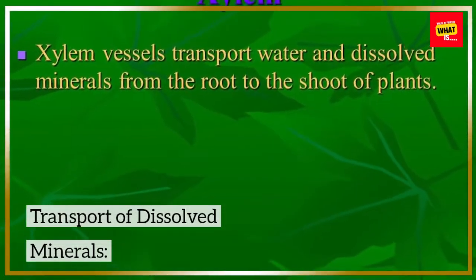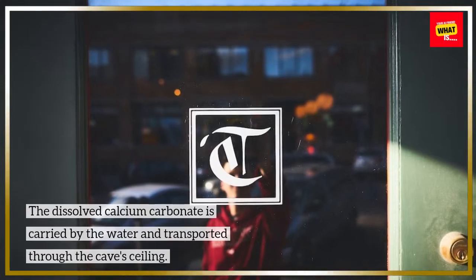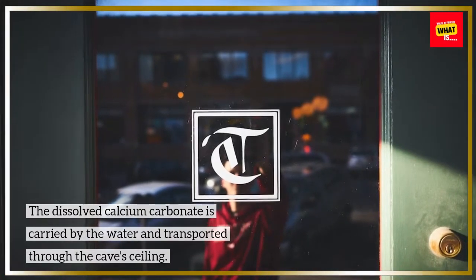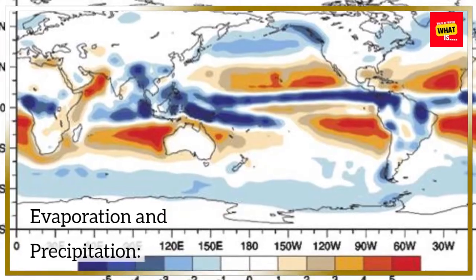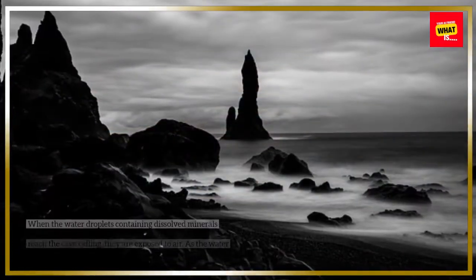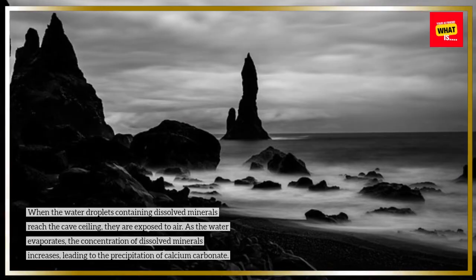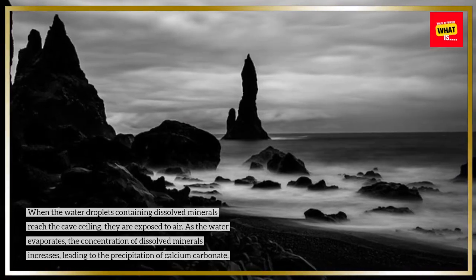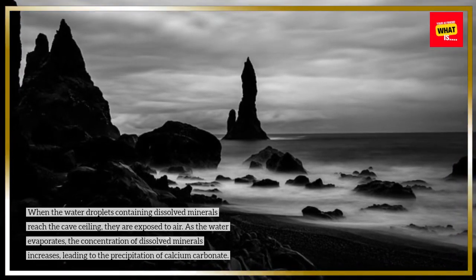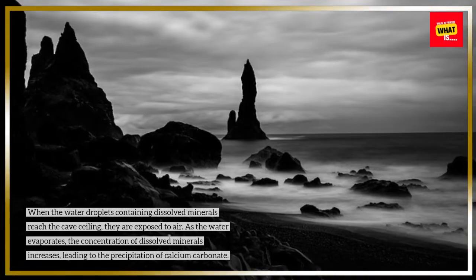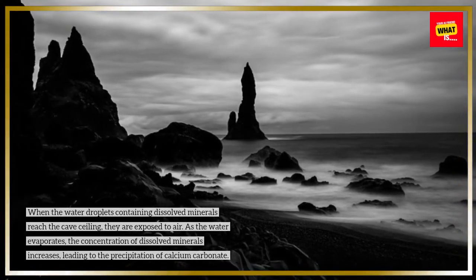Transport of Dissolved Minerals: The dissolved calcium carbonate is carried by the water and transported through the cave ceiling. Evaporation and Precipitation: When the water droplets containing dissolved minerals reach the cave ceiling, they are exposed to air. As the water evaporates, the concentration of dissolved minerals increases, leading to the precipitation of calcium carbonate.